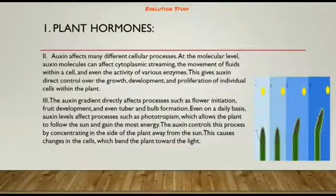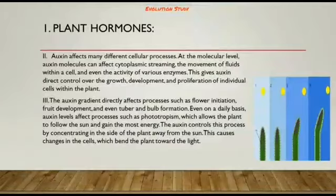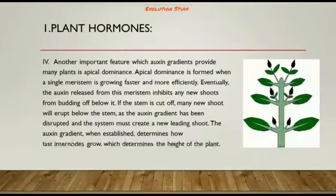The auxin gradient directly affects processes such as flower initiation, fruit development, and tuber and bulb formation. On a daily basis, auxin levels affect processes such as phototropism, which allows the plant to follow the sun. Auxin controls this process by concentrating on the side of the plant away from the sun, causing changes in the cells which bend the plant towards the light.